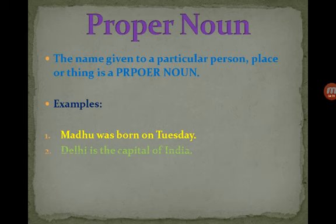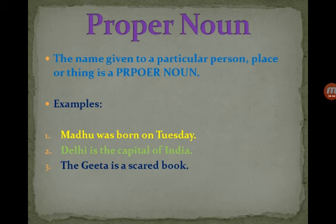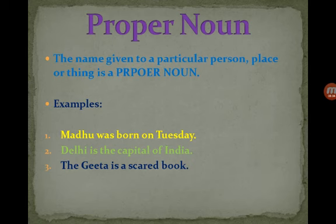Next example: Delhi is the capital of India. What proper nouns are you seeing here? Delhi and India — these two are proper nouns. Delhi and India are particular places. The definition says a particular person, place, and thing will be proper nouns, and here Delhi and India are names of particular places, so the category fits.